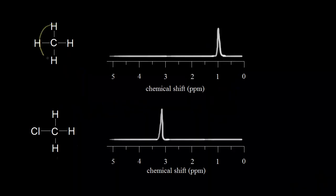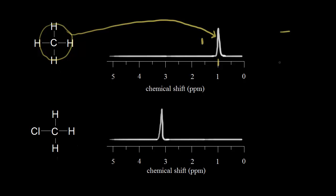If we look at methane, we have four equivalent protons, so we would expect one signal on an NMR spectrum. This signal occurs at approximately one part per million. The signal is talking about the energy difference between the alpha and the beta spin state. There's an energy difference between those two spin states, and this energy difference corresponds to a frequency because E is equal to H nu.